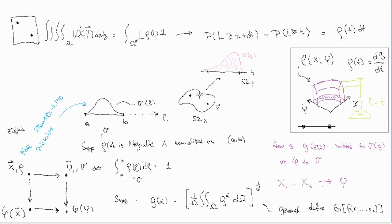What is basically happening is that you have this domain called omega_x, you have these points, and you construct from this domain another domain called omega_y. This picture is one-dimensional, but it can be any dimensional — it doesn't matter, even more dimensions. And this new function, from now on I will denote it by sigma.